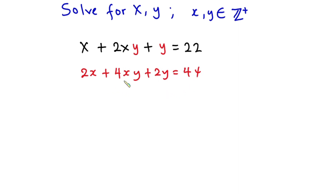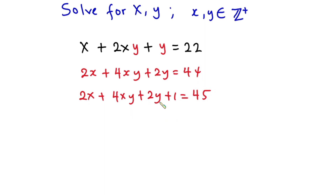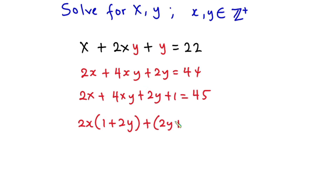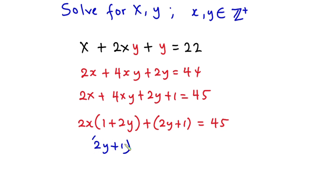We still have three terms, so let's add 1 to both sides of the equation. We get 2x + 4xy + 2y + 1 = 45. Now we have four terms, so we can factorize. We take 2x common from the first two terms: 2x(1 + 2y), then the remaining terms give (2y + 1). So we have (2y + 1)(2x + 1) = 45.